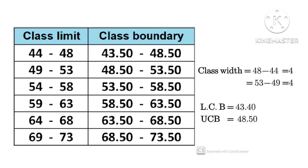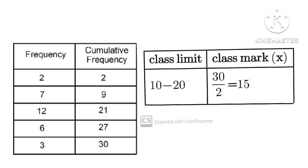For class width, you subtract the upper class limit from the lower class limit to get your class width. For cumulative frequency, you start with the first number, add it with the second number, and continue adding up to 30. One amazing thing about cumulative frequency is that the sum of all the frequencies gives you the same value as the last cumulative frequency, which is 30.